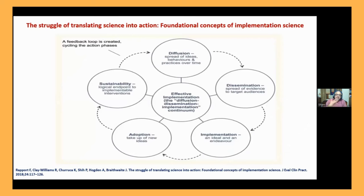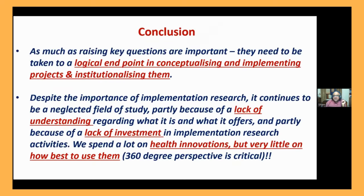You also need to create a feedback diffusion loop. We know there is an effective intervention and people are waiting for it — why are we not able to get demand and supply to meet each other? Diffusion, dissemination, implementation, adoption, and sustainability of the diffusion-dissemination-implementation continuum is very critical when it comes to addressing the challenge of implementation research in health sciences. In conclusion, as much as raising key questions is important, there is a need to take this to a logical endpoint — conceptualizing, implementing, and sustaining or institutionalizing projects. A project becomes a program, and a program becomes a portfolio.